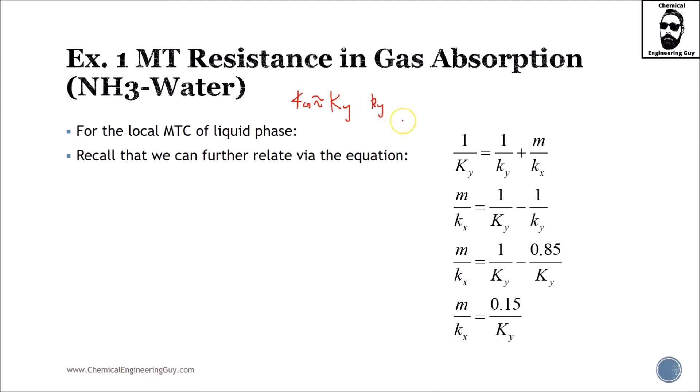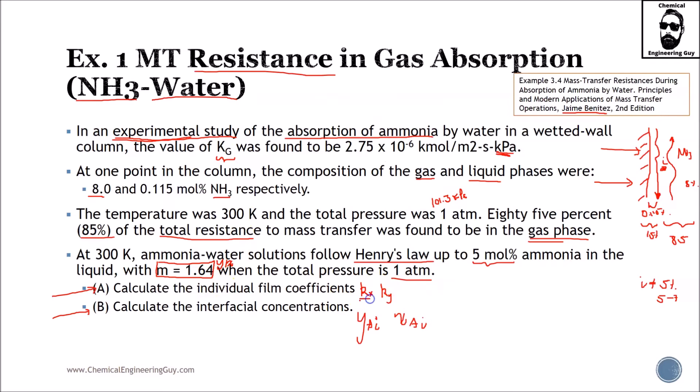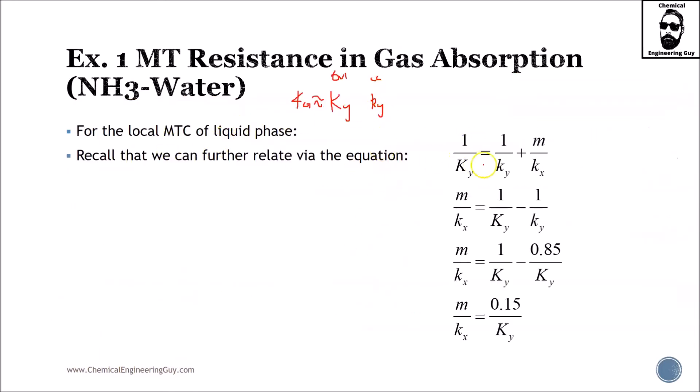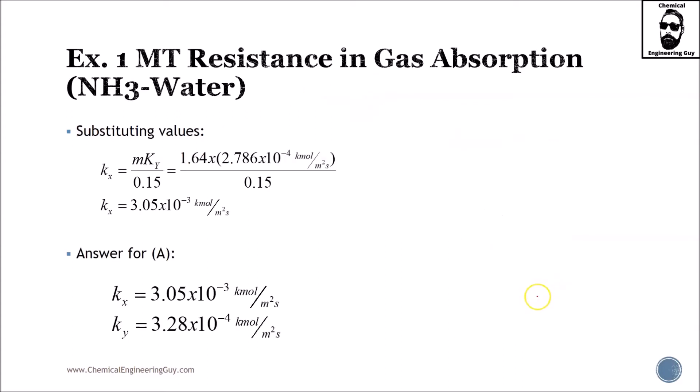Now that I have Ky lowercase which is local, I need Kx. It's easier if I use this equation. I have this one, this one, and m which is equilibrium relationship, so I just need to solve for Kx. I do this by subtracting, then substitute data. You will see that this will be 15, which is of course the resistance in the liquid phase. Then I substitute for m, Ky, and 15, and I get my local mass transfer coefficient in the liquid phase.